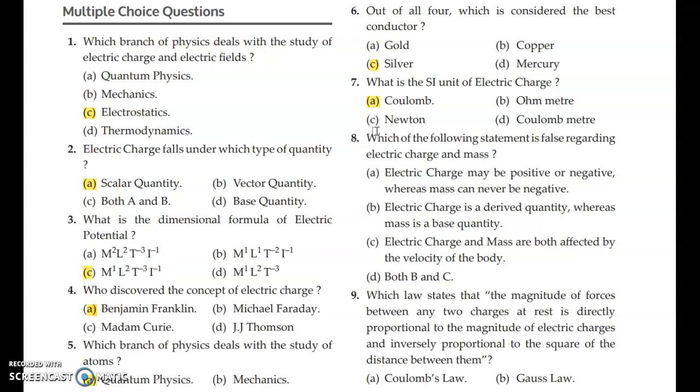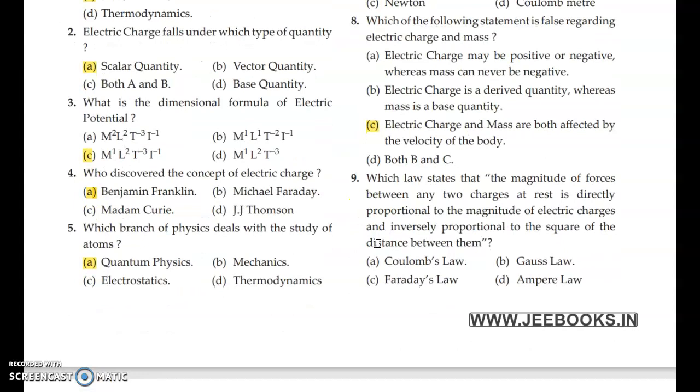Which of the following statements is false regarding electric charge and mass? Read the options, pause the video. Answer is option C. Which law states the magnitude of forces between any two charges at rest is directly proportional to the magnitude of electric charges and inversely proportional to the square of the distance between them? Answer is option A, Coulomb's law.